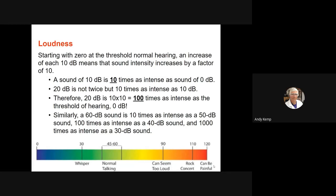If you take the 30 decibel difference between 60 and 30 decibels and divide by 10, you get 3 — that is the exponent of 10, your factor difference between those two sounds. 10 to the third would be a 1,000 times difference between a 30 dB and a 60 dB sound.